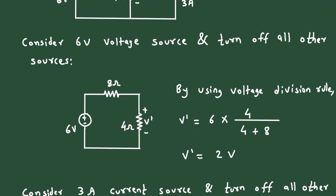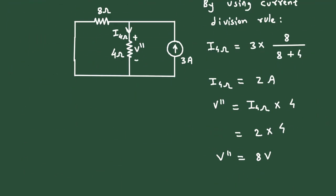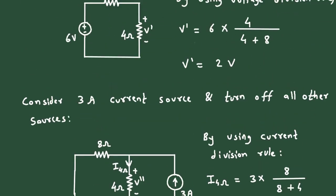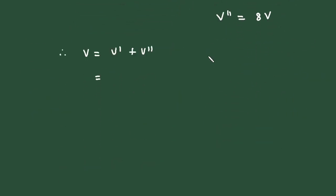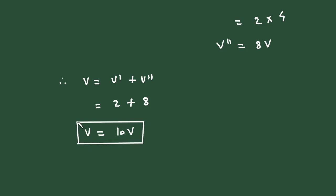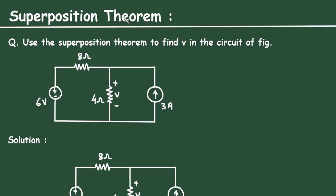By the superposition theorem, V equals V prime plus V double prime. The value of V prime is 2 volts and V double prime is 8 volts, so V equals 10 volts. This is the final answer using the superposition theorem.